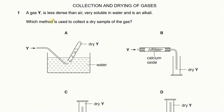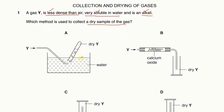Now let's see some questions related to the collection and drying of gases. The first question says a gas Y is less dense than air, is very soluble in water, and is an alkali. Three properties given: less dense than air, very soluble, and an alkali. Which method is used to collect a dry sample of this gas?